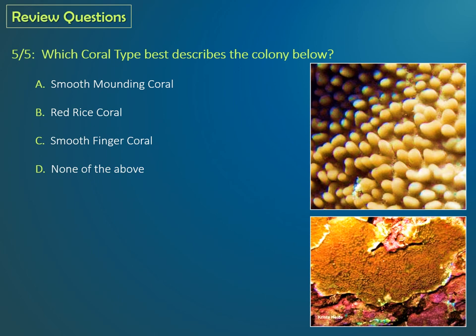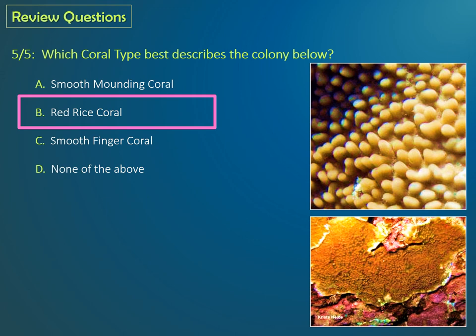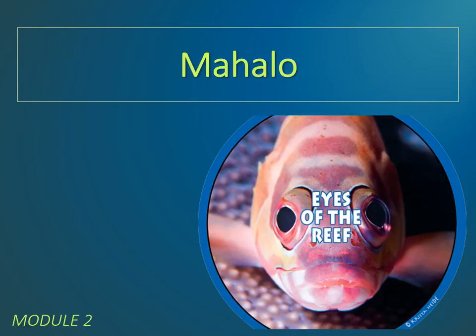Last question: Which coral type best describes the colony below? Is it A, smooth mounding? B, red rice? C, smooth finger? Or D, none of the above? If you said B, red rice coral, you're correct. How did you do on the quiz? If you missed more than a few questions, you may want to go back and review the materials in this module before moving on to Module 3. Mahalo for your participation in the Eyes of the Reef online training program.